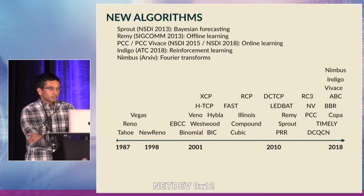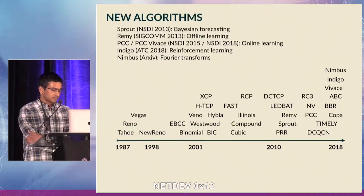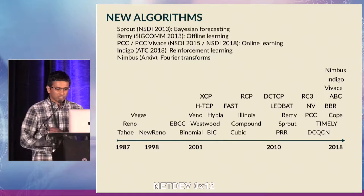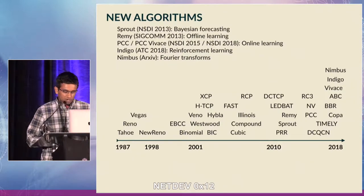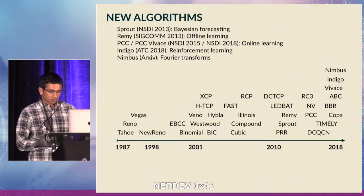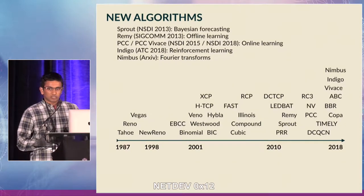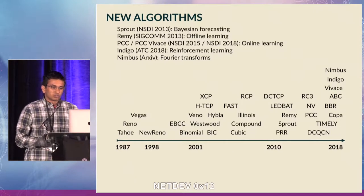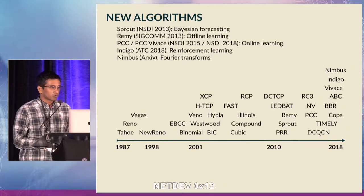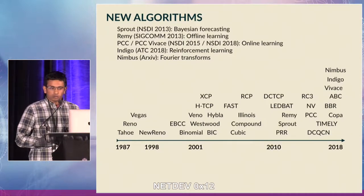Second, while datapaths have been getting faster, congestion control algorithms have been getting more and more sophisticated. The timeline on this slide is approximate and not to scale. Algorithms proposed in the last few years use increasingly complex methods to detect link capacity or cross-traffic characteristics and adapt their sending rates. We have Sprout and Remy using Bayesian forecasting and offline learning, PCC using online learning, Indigo using reinforcement learning trained on the Pantheon dataset, and our own work at MIT using signal processing techniques to detect and respond to cross-traffic characteristics.